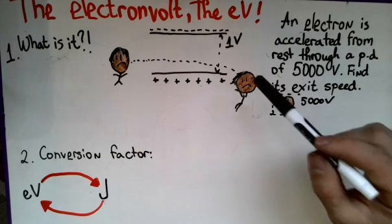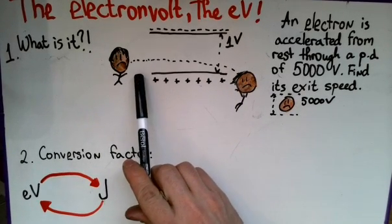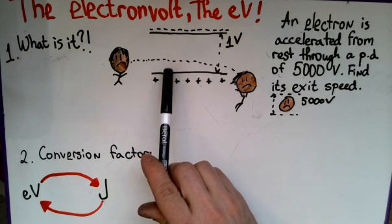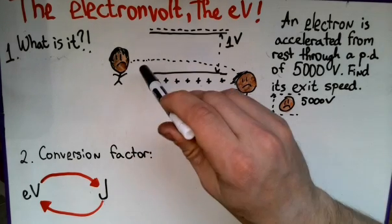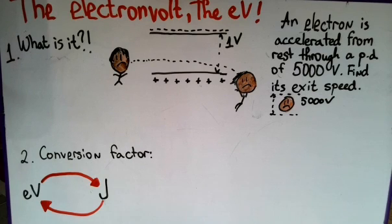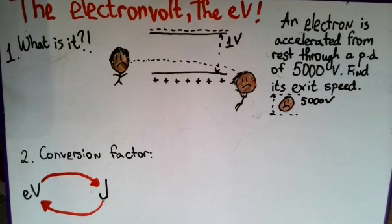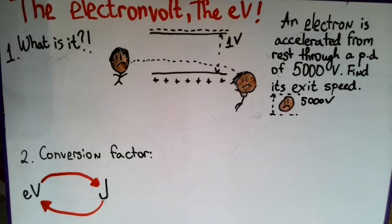Let's say the potential difference is one volt. When the electron goes through those plates, it's going to gain energy. The reason why it gains energy is because it will be instantly attracted towards the positive plate, because negative and positive attract. So as the electron leaves, it will have gained an additional amount of energy, and that gained energy is really what the electron volt is. In fact, the definition of an electron volt is that it's the energy gained or lost by an electron when it goes through a potential difference of one volt.